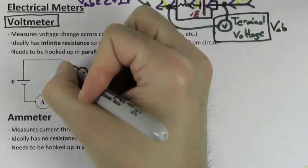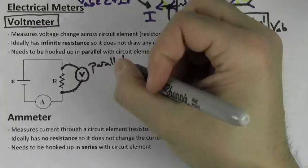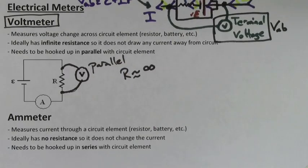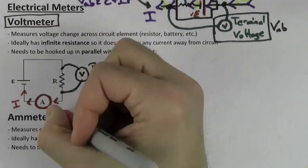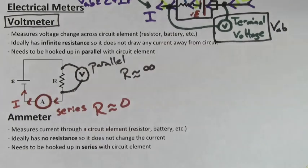Voltmeters measure the voltage across two points and they should be hooked up in parallel with the circuit element that they're measuring. An ideal voltmeter would have an infinite resistance. Ammeters measure the current through a leg of a circuit and they need to be hooked up in series. An ideal ammeter would have zero resistance.